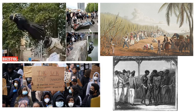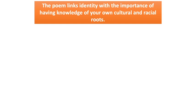If we now think about the poem itself, what I want us to think about predominantly as we look at today's lesson is that the poem links identity with the importance of having knowledge of your own cultural and racial roots. Identity is a really central idea in this poem — it's also a central idea in the Power and Conflict collection as a whole. I want you to really think about this idea of identity as we move through the rest of the analysis of the poem.